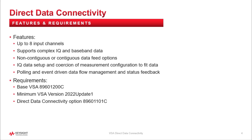Let's cover the features associated with Direct Data Connectivity. We've touched on the IQ data setup and the coercion VSA performs to fit the data into the measurement, as well as the polling and event-driven model that supports data transfer. The data can be non-contiguous or contiguous. Typically, hardware acquires data in block form and analyzes each block, while contiguous data feed may be a stream from a simulation or a situation where the user wants to capture all demodulated symbols without gaps. We support up to eight input channels, and those channels can be complex IQ or baseband data — so whether you're working in the RF realm or with baseband real data from oscilloscopes, both are supported.